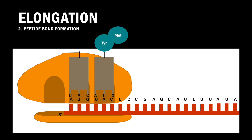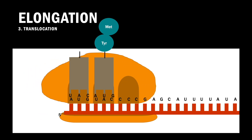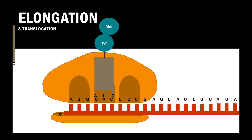This is then followed by translocation, whereby the ribosome moves one codon forward, translocating the tRNA that was in the P site into the E site and the tRNA that was in the A site into the P site. The empty tRNA will leave the complex. The cycle then continues back to codon recognition, where another charged tRNA with an anticodon matched to the codon in the A site enters the complex.